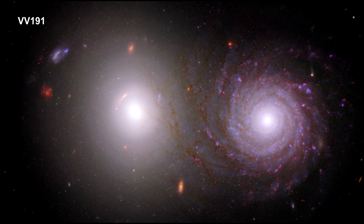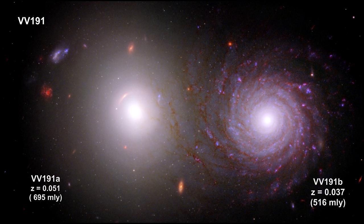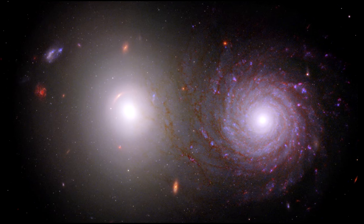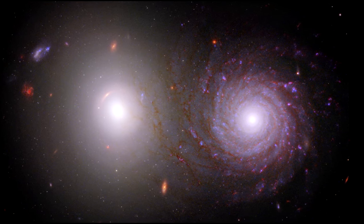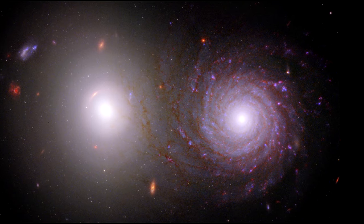Now, Hubble and Webb have teamed up for a study of the galaxy pair to better understand the spiral galaxy's dust. The galaxy pair is particularly useful for dust studies because the background elliptical has its brightest region right behind the edge of the outermost dust lanes in the spiral. A wide range of electromagnetic waves were used to construct the image, with ultraviolet and visible light from Hubble and near-infrared light from Webb.